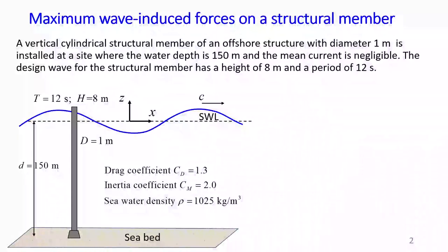Our problem is a vertical cylindrical structural member of an offshore structure with diameter 1 meter, installed at a site where the water depth is 150 meters and the mean current is negligible. The design wave for the structural member has a height of 8 meters and a period of 12 seconds. I show all these parameters on a diagram.